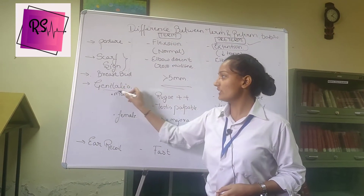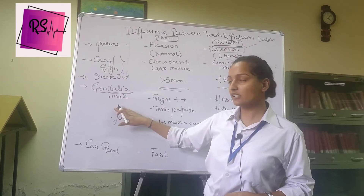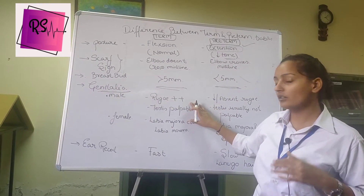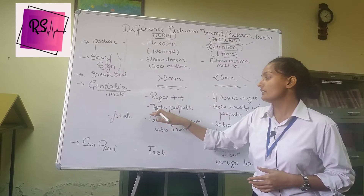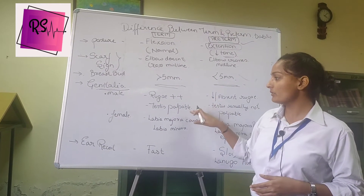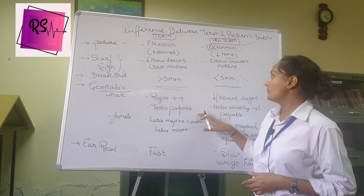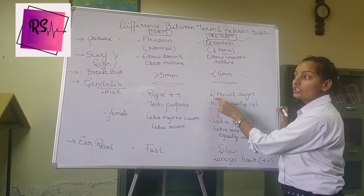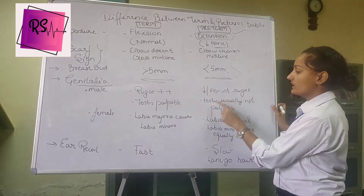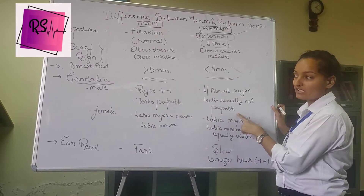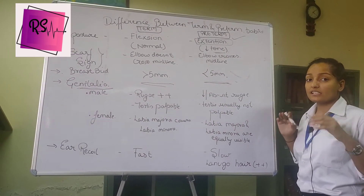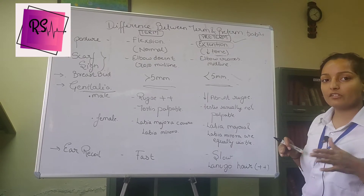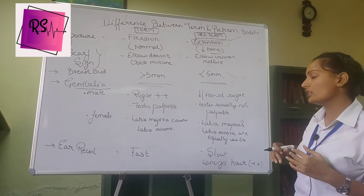Now, regarding the genitalia of the baby: if the child born is a male, the rugae present in the testes are much more and present in sufficient amount, and the testes are present in the scrotum. But if a male child is preterm, there are absent or reduced rugae. Also, the testes are usually not palpable — they are not descended into the scrotum and remain in the abdominal area. An operation may be required, or if we wait, the testes may descend automatically into the scrotum.